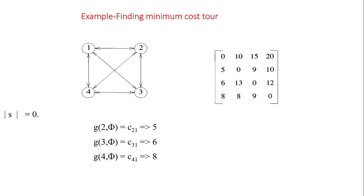All cities have already been visited. If you are currently at city two with no city left to visit, you go back to the origin, city one. The cost is c(2,1), which from the cost matrix is 5. Similarly, if you are at city three the cost is 6, and at city four the cost is also computed. These subproblems may be part of your optimal solution.